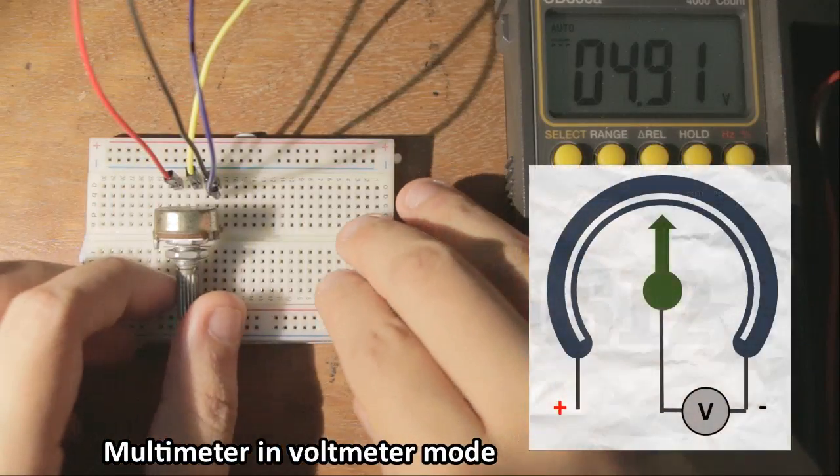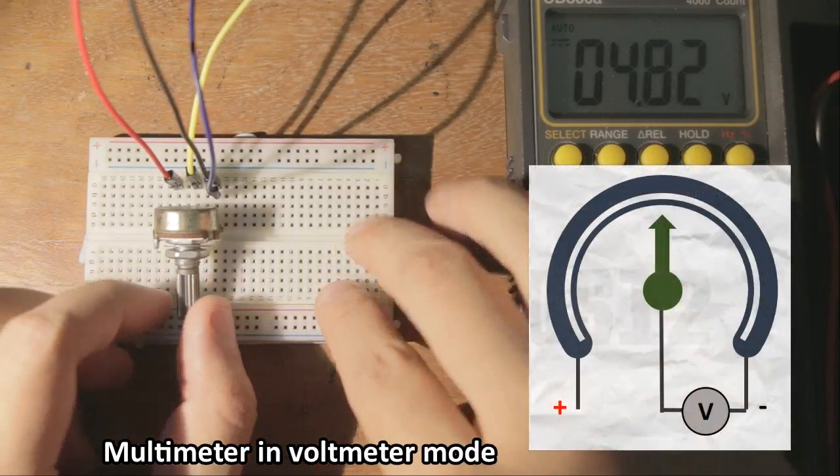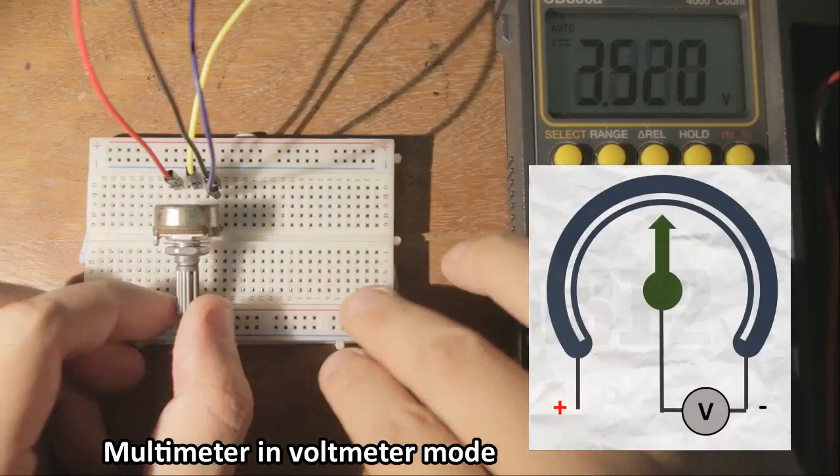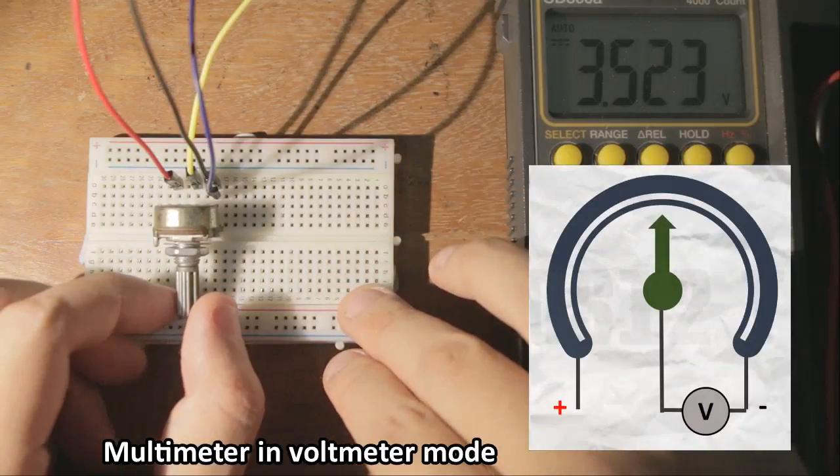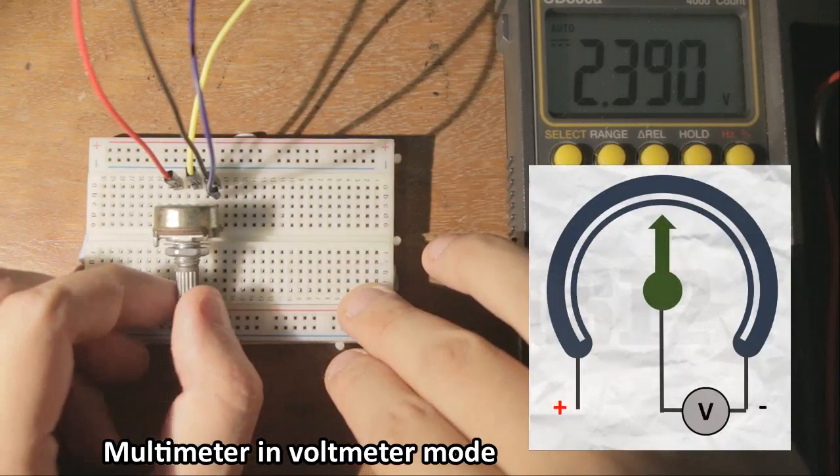By twisting the knob, we can smoothly change up the resistances, and thus as a result, the ratio between the two resistors. This gives us a simple way to adjust the output voltage.